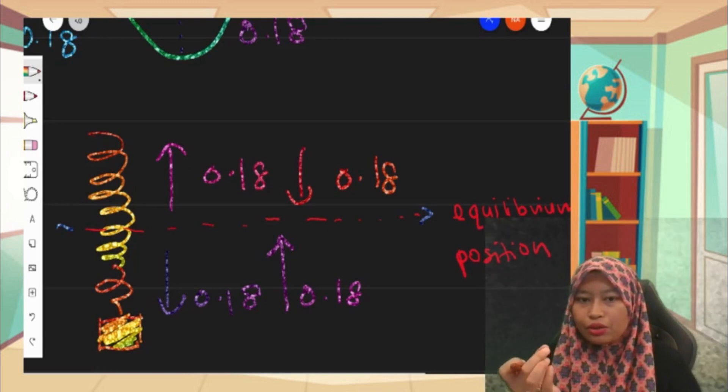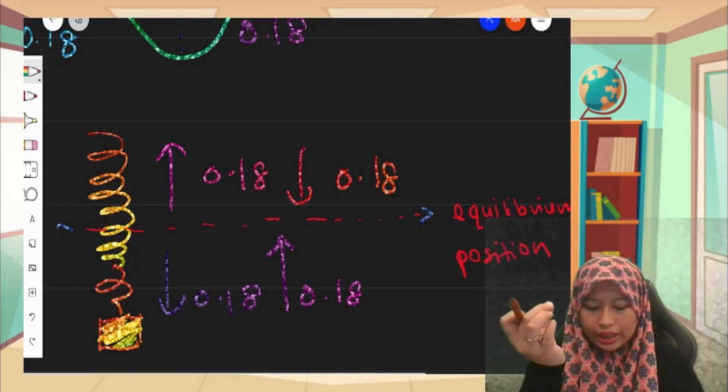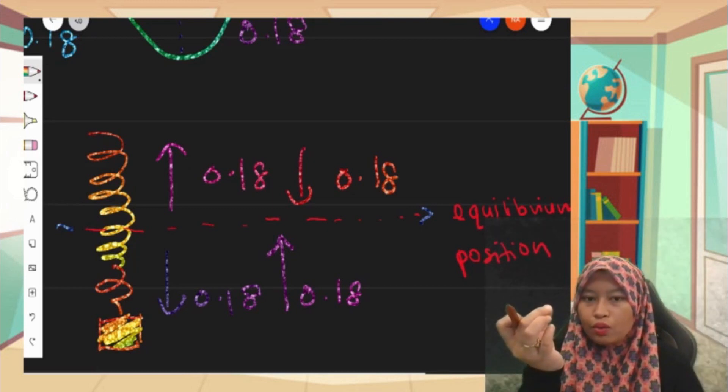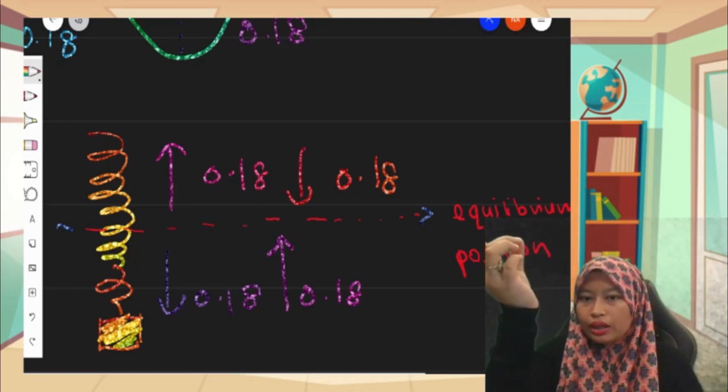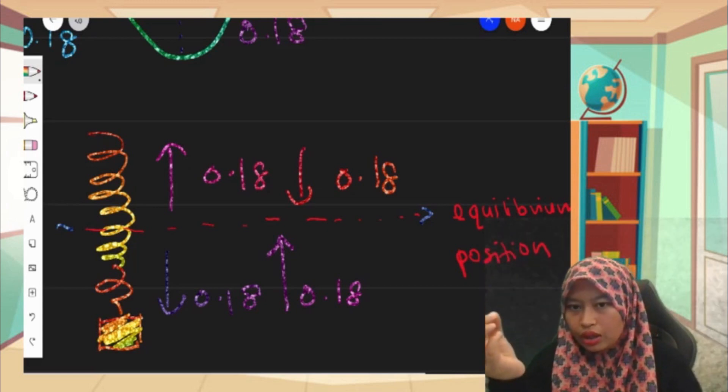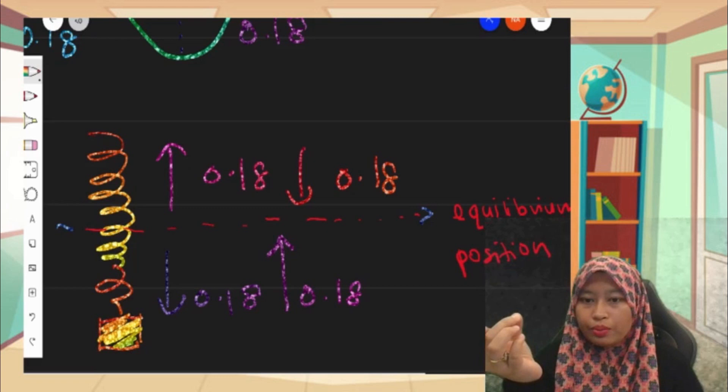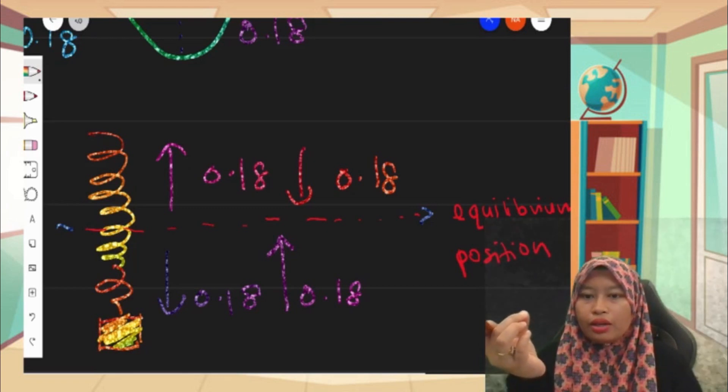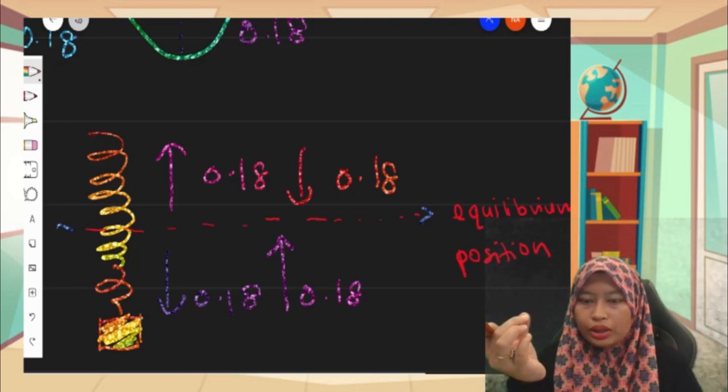When it's moving to the downward, there is 0.1 meter, and when it goes upward there is 0.1 meter again. And when it moves upward, it is one more 0.18 meter, and when it moves to the equilibrium position again, then we have the fourth 0.1 meter distance.